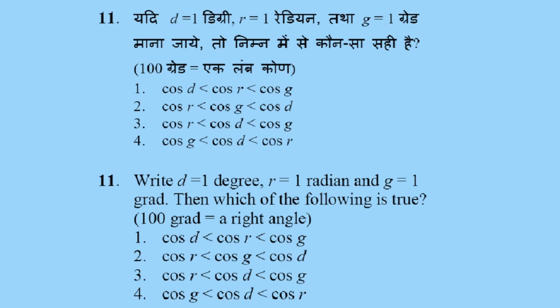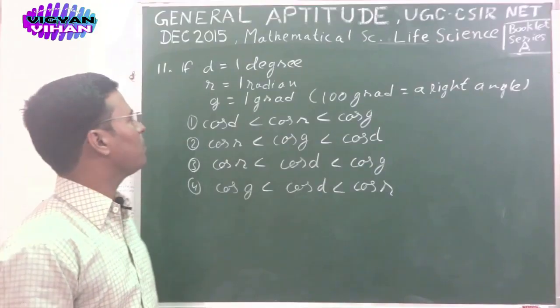There is a hint: 100 gradient is equal to a right angle. There are four options. Option 1: cos D < cos R < cos G. Option 2: cos R < cos G < cos D. Option 3: cos R < cos D < cos G. Option 4: cos G < cos D < cos R.